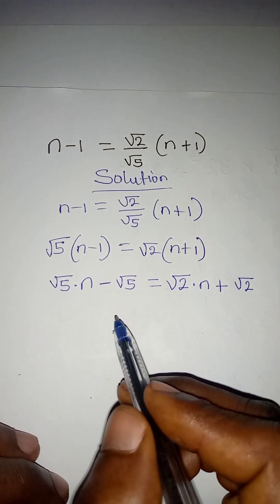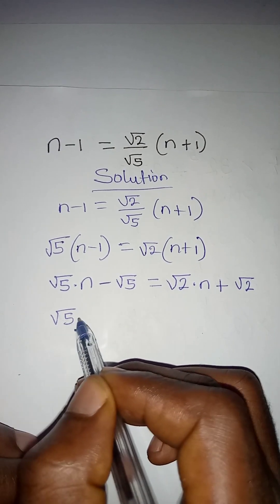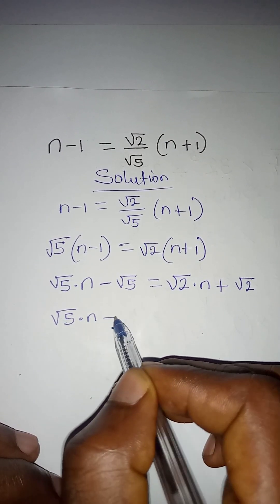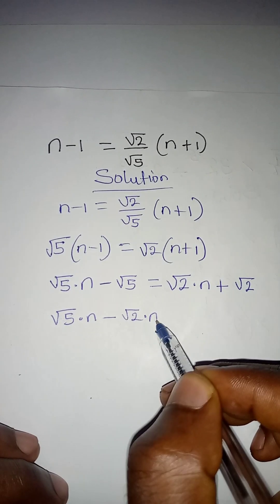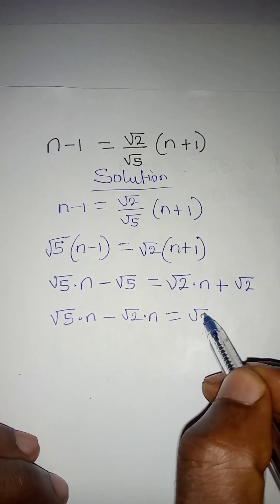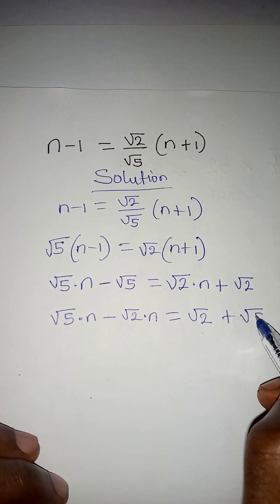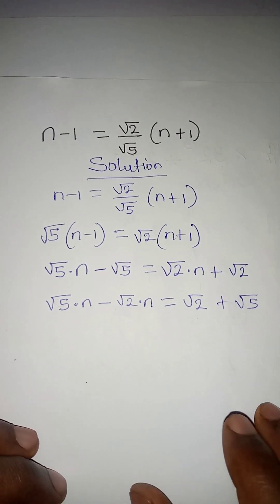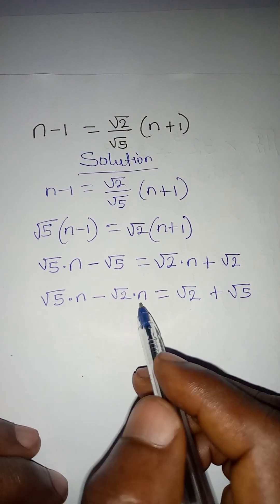Now the terms that contain n I have to bring together. So I will have root 5 n minus root 2 n, equal to root 2 plus root 5.